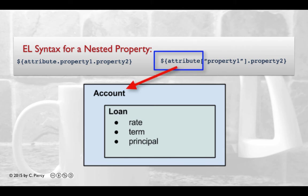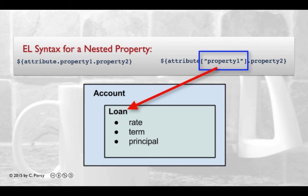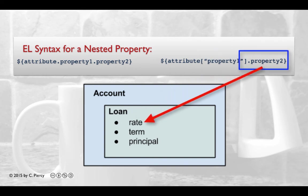We can also use this notation to substitute for the first one. Both of these are equivalent. Here we use attribute, again the stored JavaBean or map. In the square bracket, we provide the property and its key, or its key.